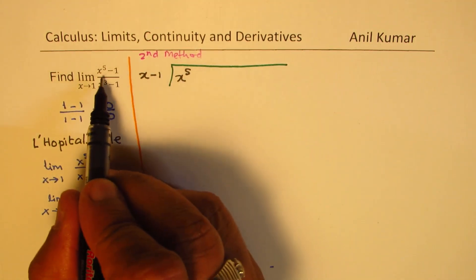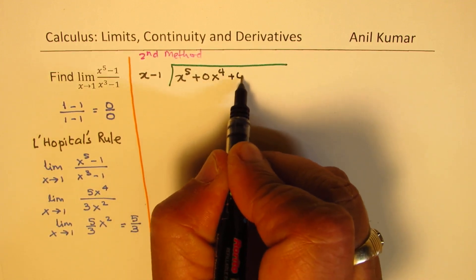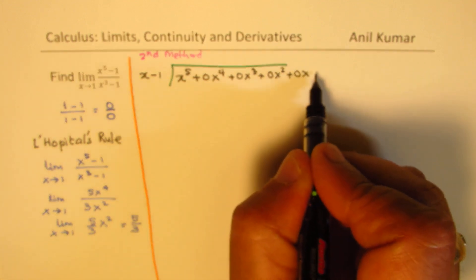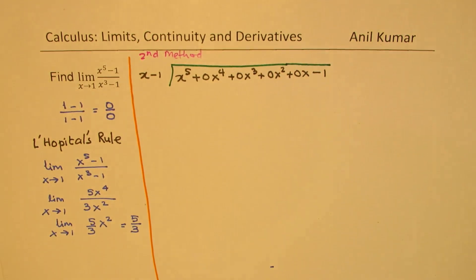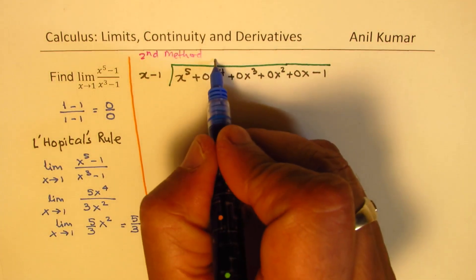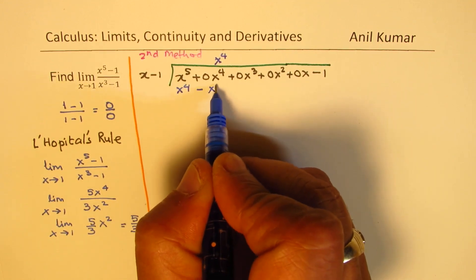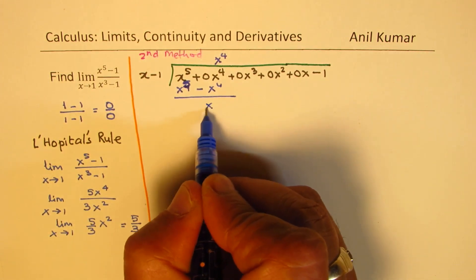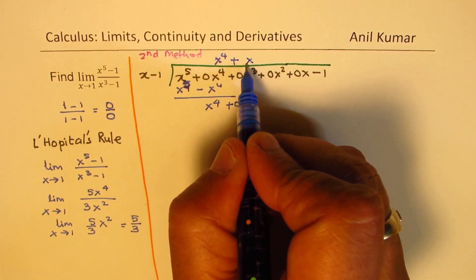Now since there are missing terms in between, it's a good idea to write them with placeholders. So we have x to the power of 5 plus 0x to the power of 4 plus 0x cubed plus 0x squared plus 0x minus 1. When we divide, we divide by x to the power of 4 first, giving x to the power of 5 minus x to the power of 4, and then bring down 0x cubed.